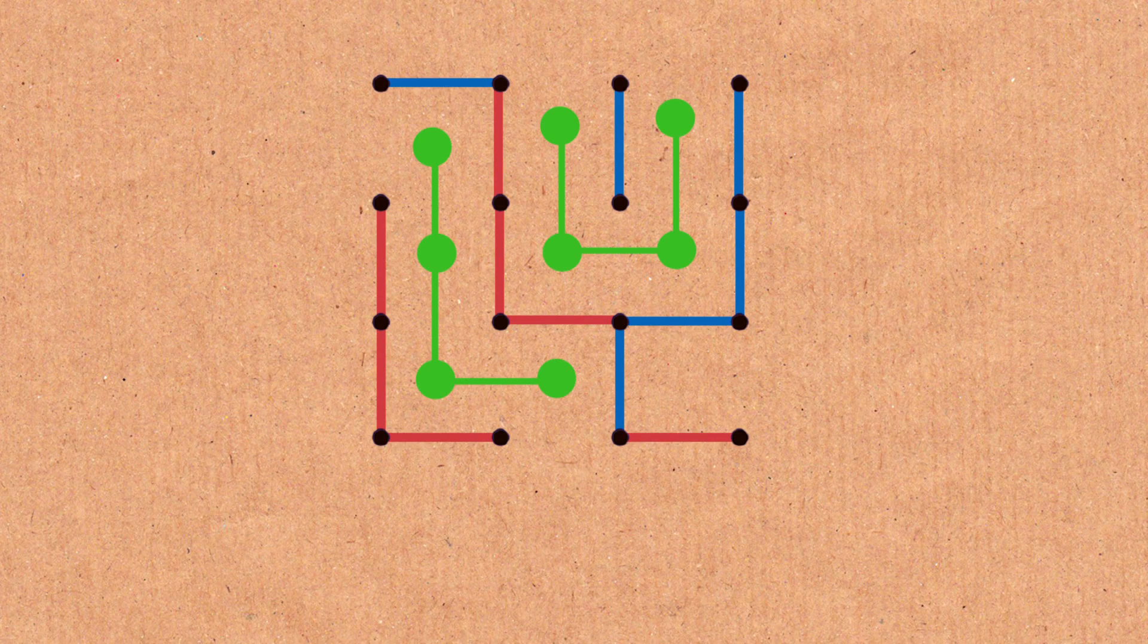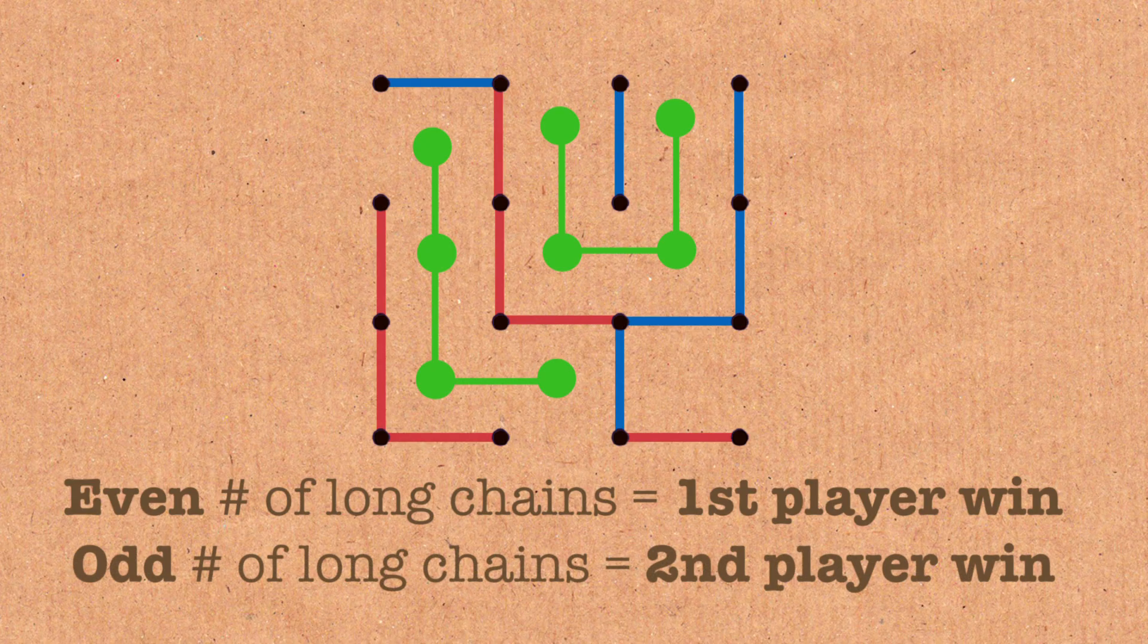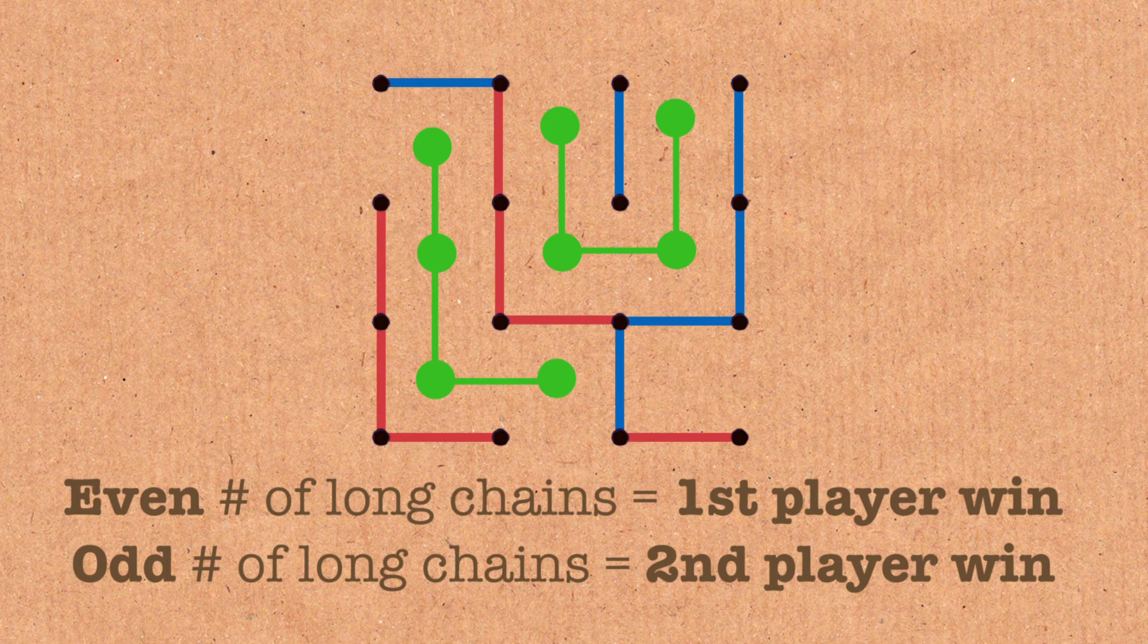Long chains are very important and a long chain is one that has three or more boxes in it. The first player wants an even number of long chains and the second player wants an odd number of long chains. How could you control the number of long chains?